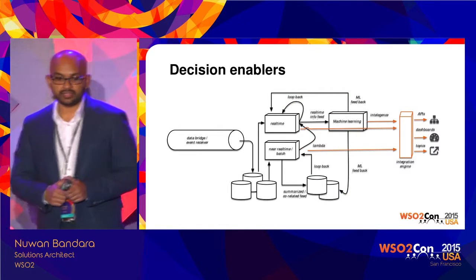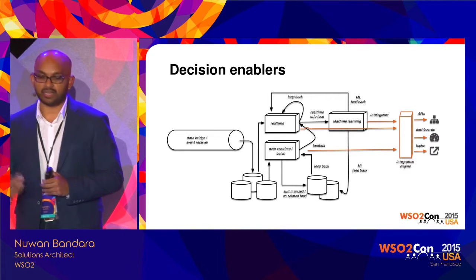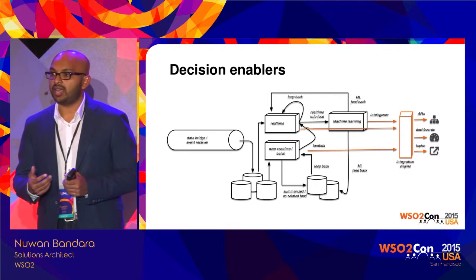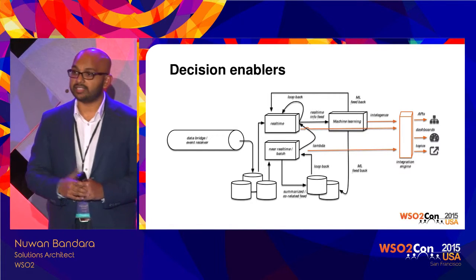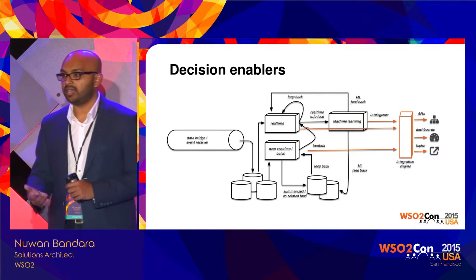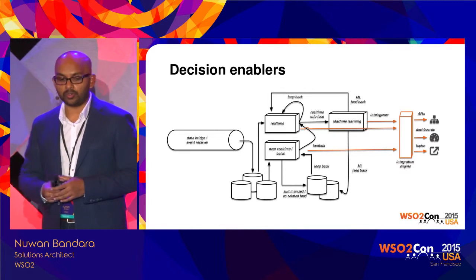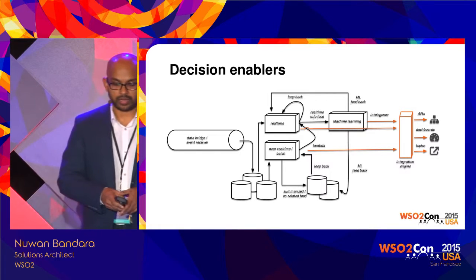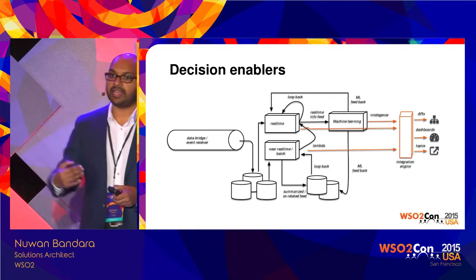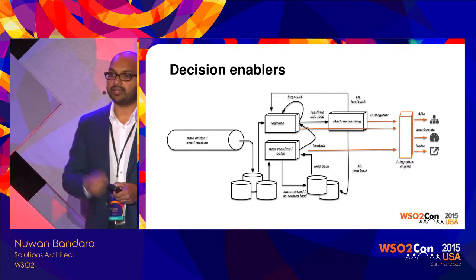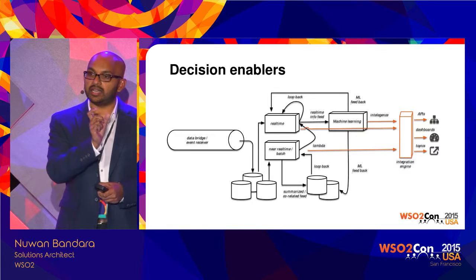Ultimately we have decision enablers. We can expose this knowledge as charts, reports, and dashboard elements to the decision makers so they can apply their own intelligence and experience and take wise decisions. From the API layer, when a message comes in we put a correlation ID on that API call, and that correlation ID will be present in the ESB, in the integration layer.